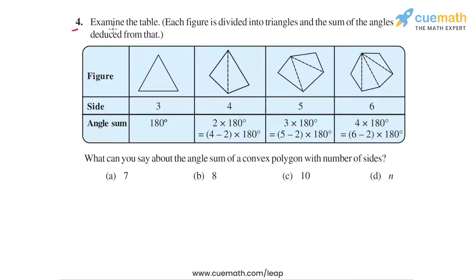Question 4 says: examine the table — this table that you see here. Each figure is divided into triangles and the sum of the angles is deduced from that. So let's understand this table. First we have a triangle, with three sides, and the sum of the angles inside the triangle is 180 degrees.